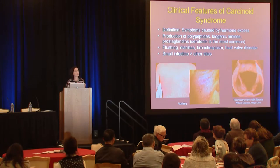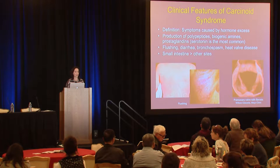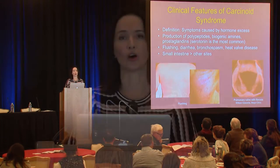Symptoms of carcinoid syndrome include flushing, diarrhea, bronchospasm — including things like asthma, wheezing, and difficulty breathing — and heart valve disease. Serotonin can cause fibrosis of the heart valves, which over time can manifest as difficulty breathing or exercise problems, and can be identified on an ultrasound of the heart.